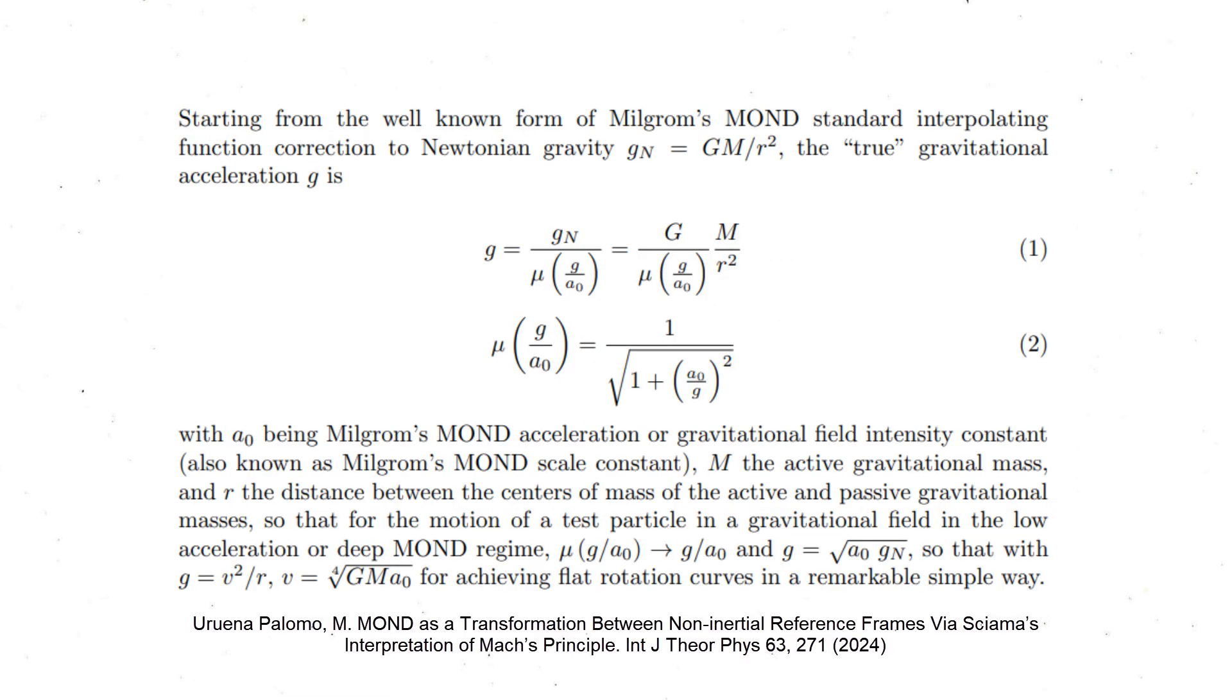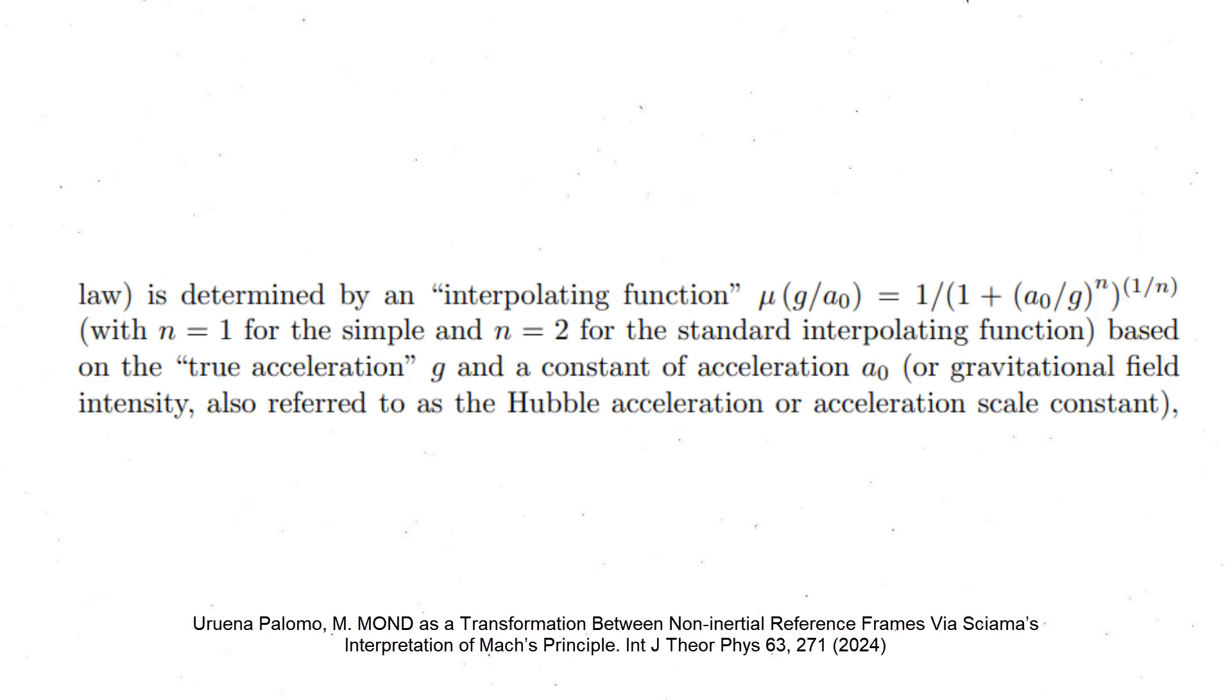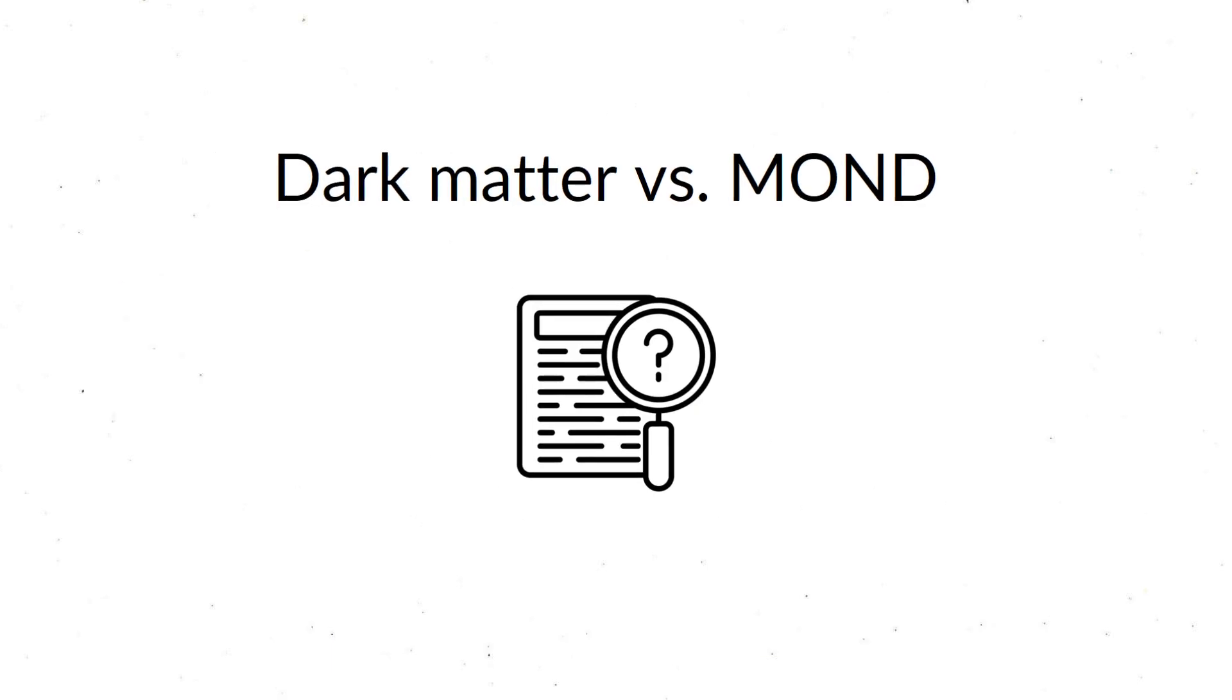In essence, MOND modifies gravity in a certain low acceleration regime through a fundamental constant of acceleration, also referred to as an acceleration scale constant or Hubble acceleration, in a way in which Newtonian gravity transitions from an inverse square law to a simpler inverse law through an interpolating function dependence on the true acceleration and the acceleration constant.